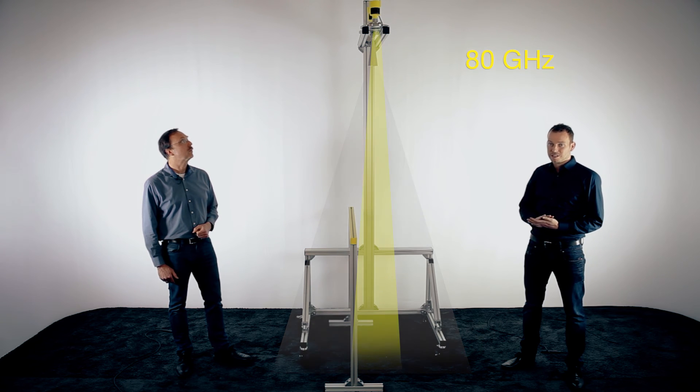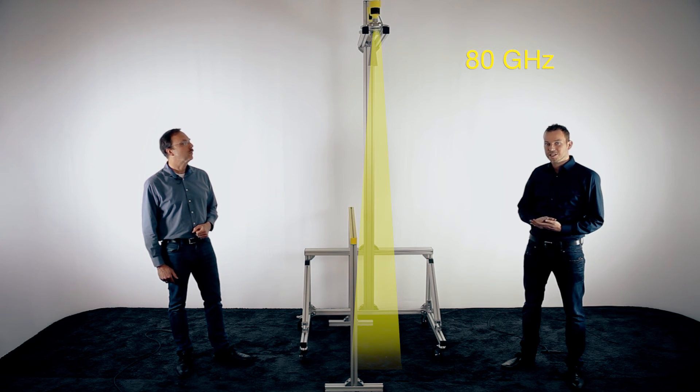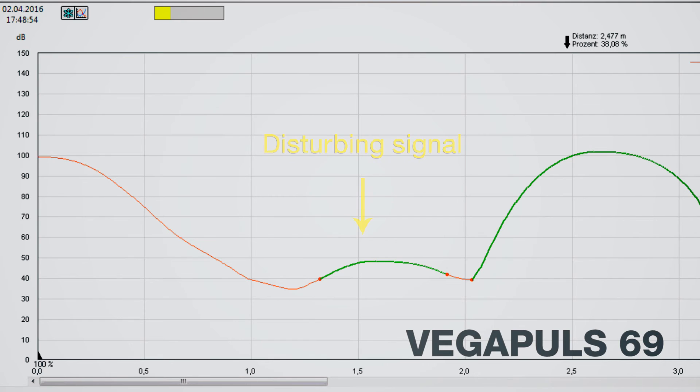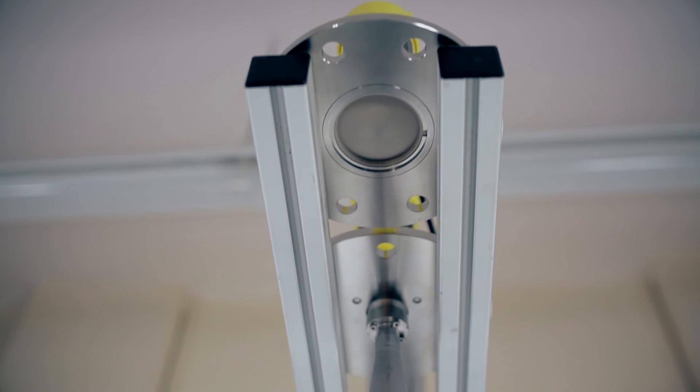With this short distance, we are already now hitting the beam angle of the 80 GHz sensor as well. So let's have a look on the echo curve. On the echo curve you see a slightly false signal, but very small, and you still have a very good product echo. So in this case, even if you have a product with bad reflecting conditions, you get a very safe measurement with the Vega Pulse 69.